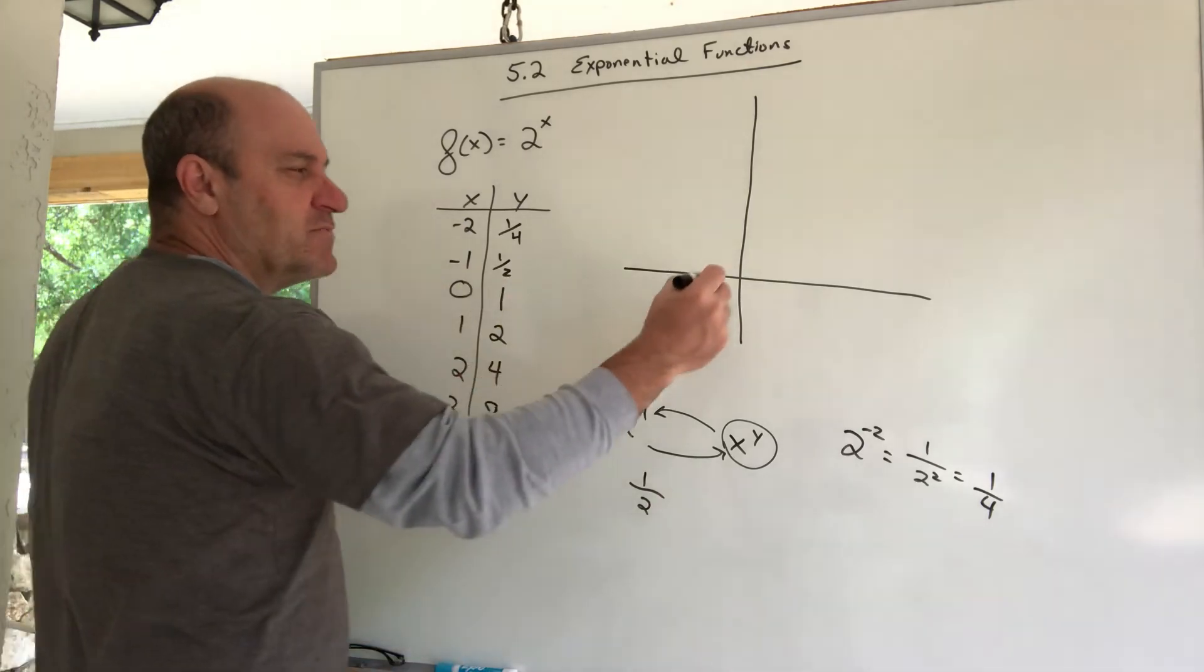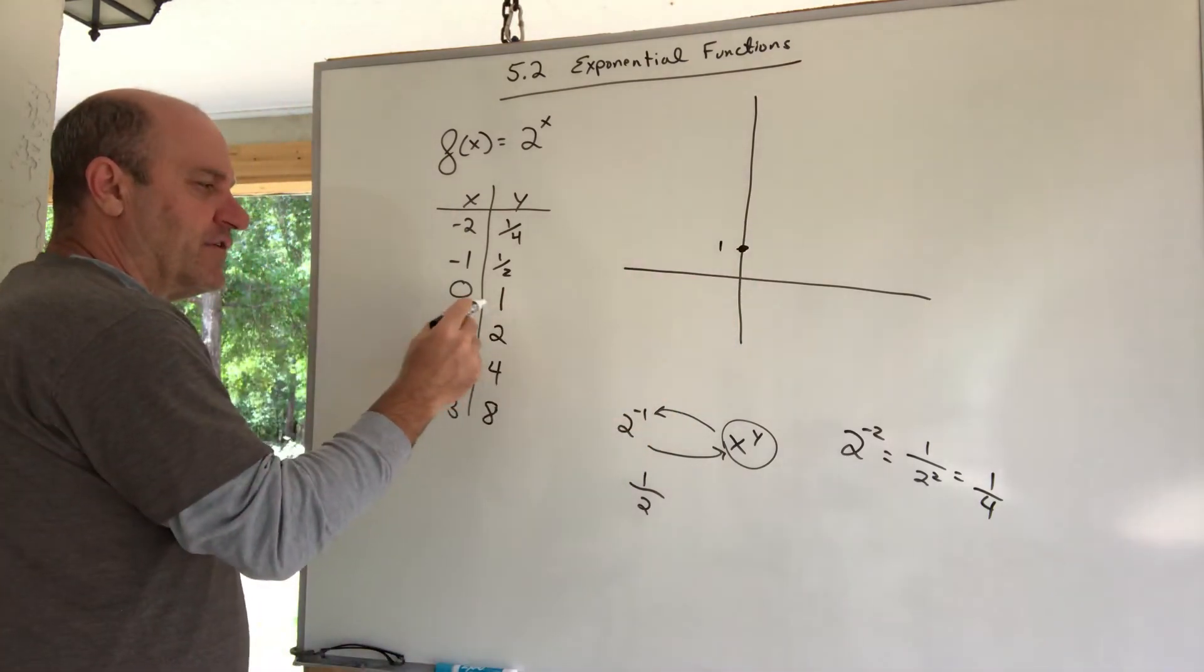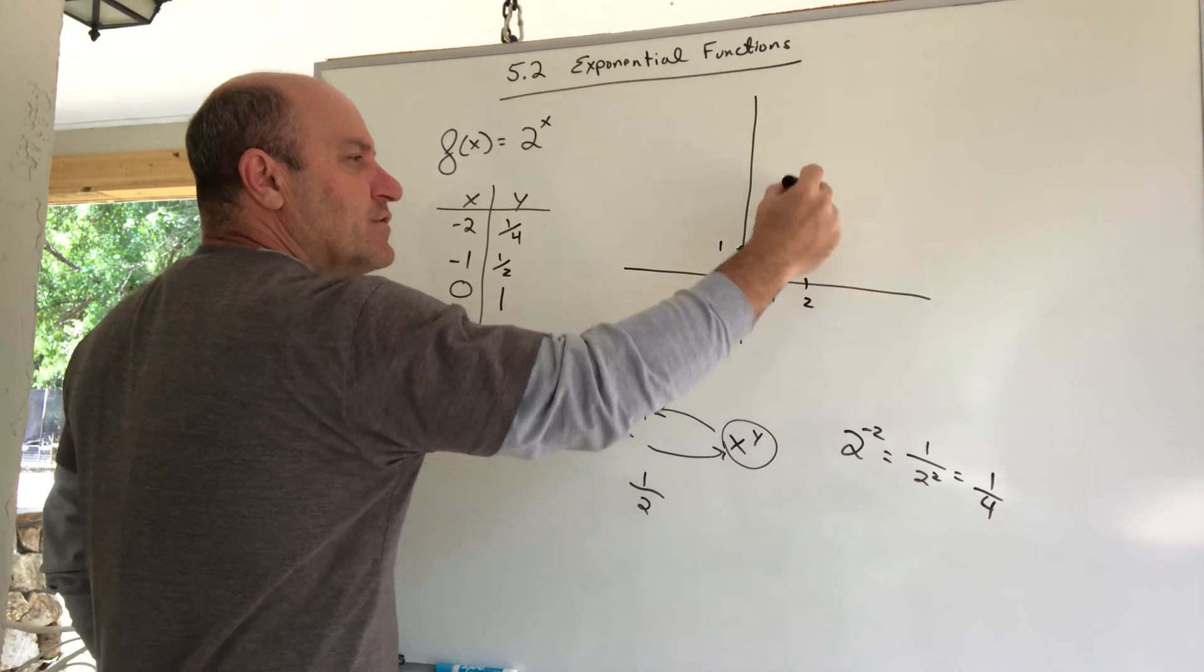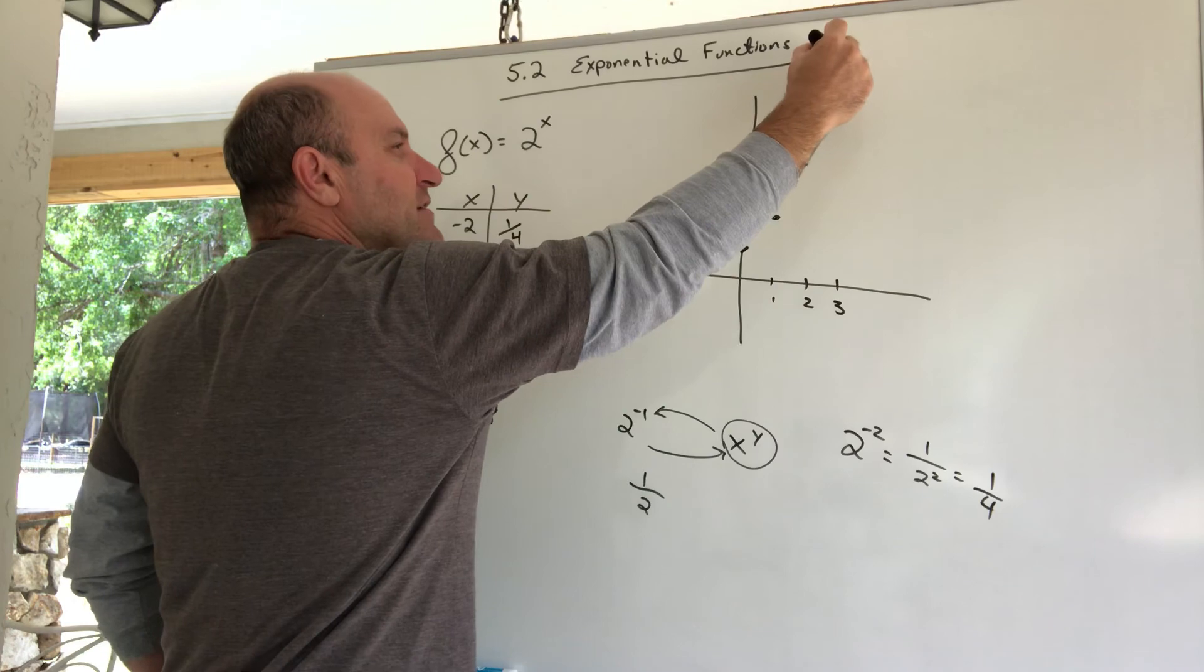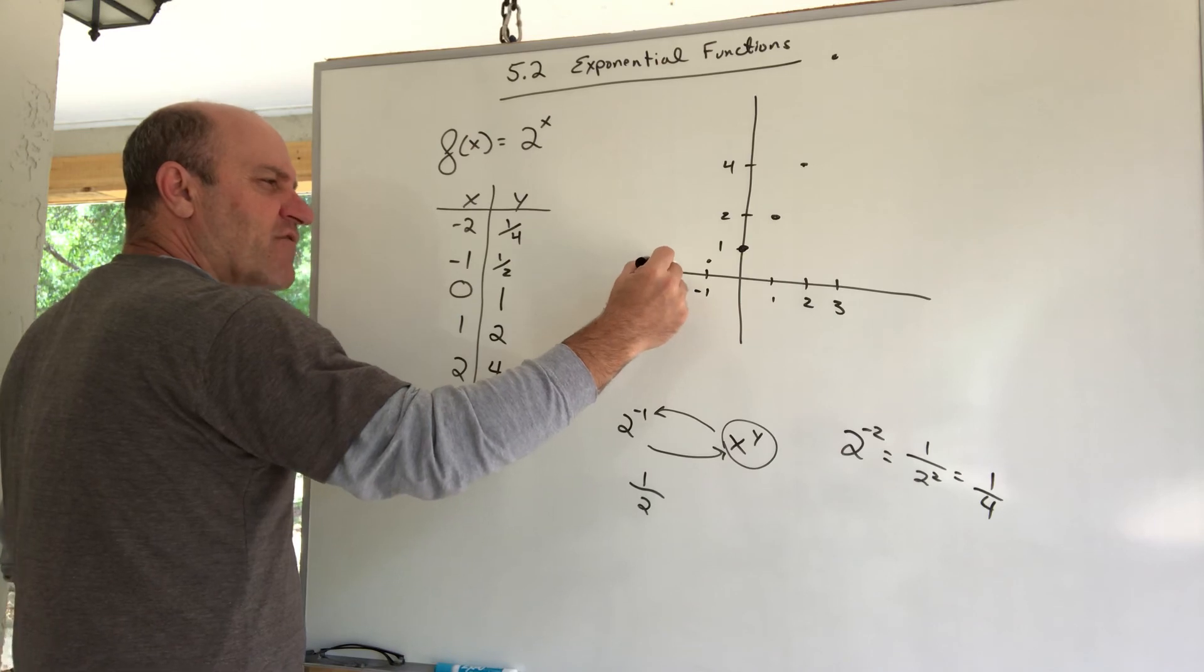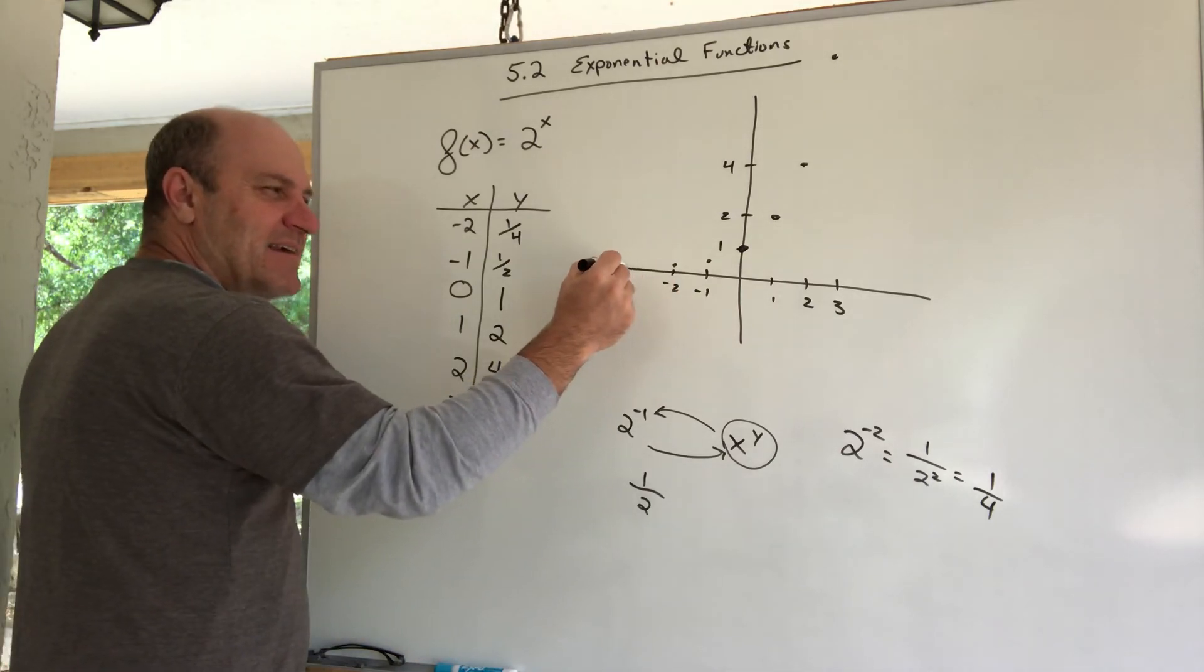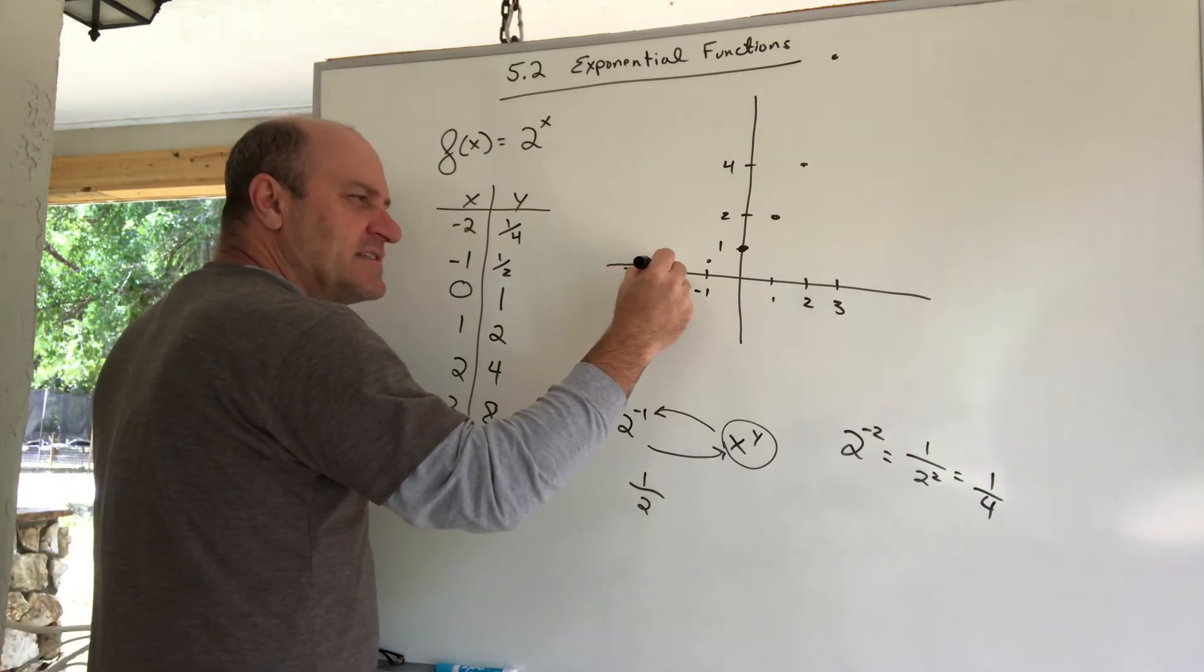If I plot these points: 0, 1, that happens to be the Y intercept there. When X is 1, Y is 2. When X is 2, it's a 4. When X is 3, it's way up here, it's an 8. When X was negative 1, it was a half. When X was negative 2, it was a fourth. If I kept going this way, it would be an 8th, a 16th, and so it gets really close to the X axis here.